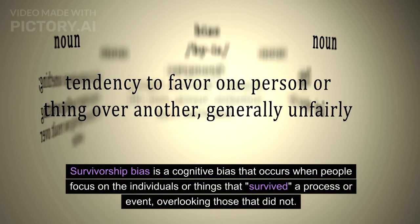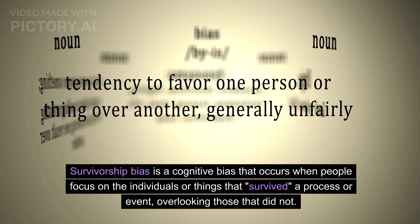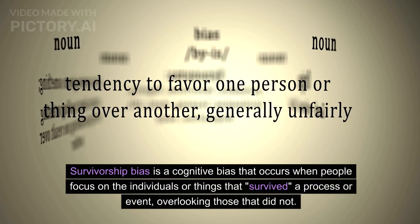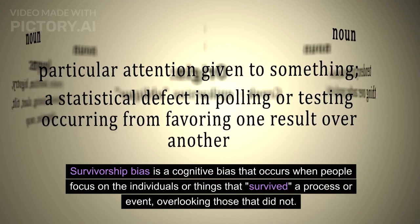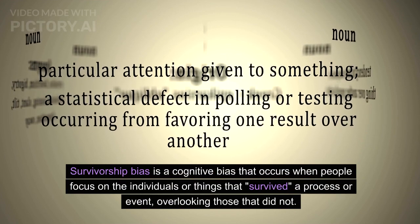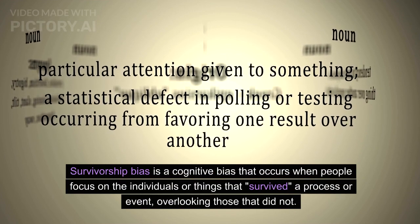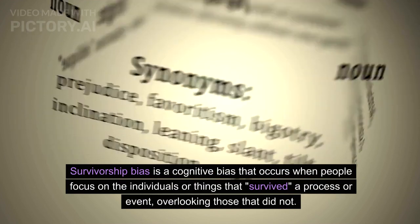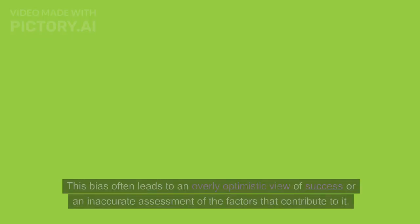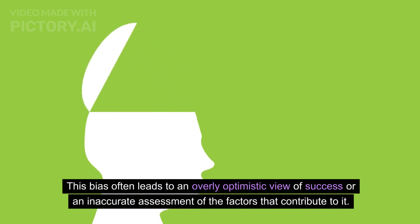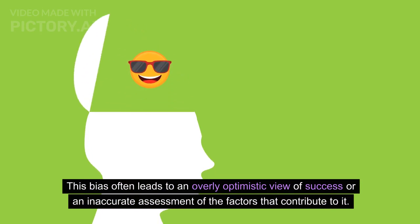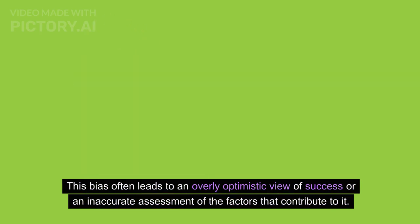Survivorship bias is a cognitive bias that occurs when people focus on the individuals or things that survived a process or event, overlooking those that did not. This bias often leads to an overly optimistic view of success or an inaccurate assessment of the factors that contribute to it.